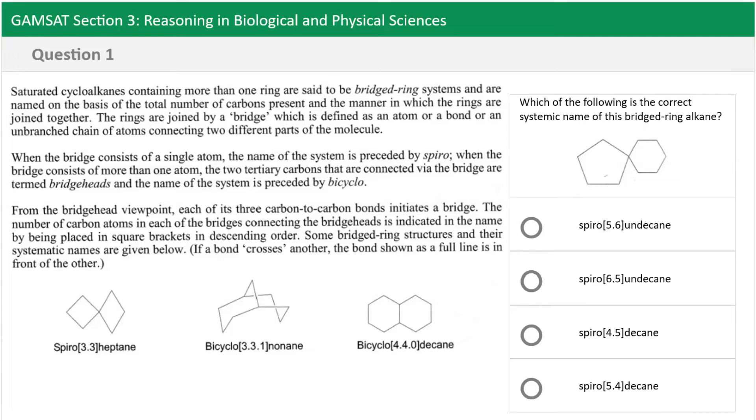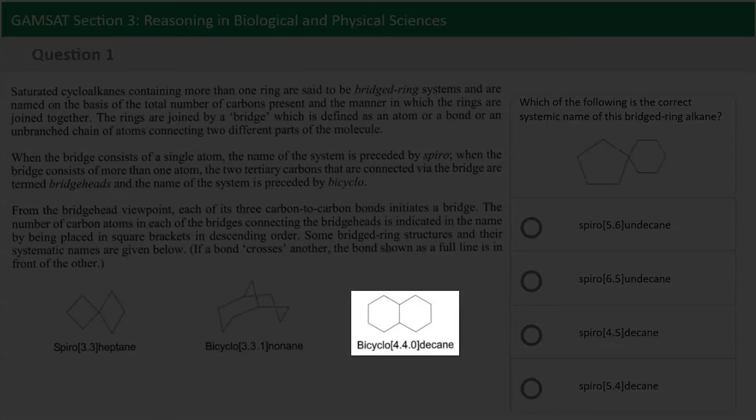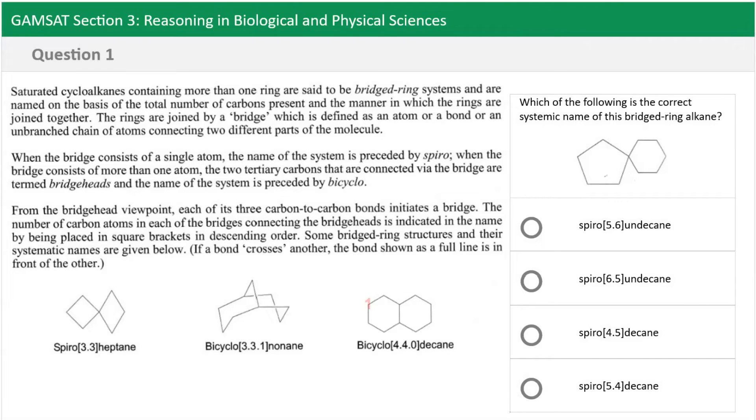In fact you can see why they've given us this example because if we looked at the last molecule that's provided in the example which is called Bicyclo 4 4 0 decane, if we check the number of carbons in this molecule it is 10 and if we check our molecule and count it it is also 10. So what this tells us is it's highly likely that our molecule is also a decane. This means that we can already eliminate half of the options.